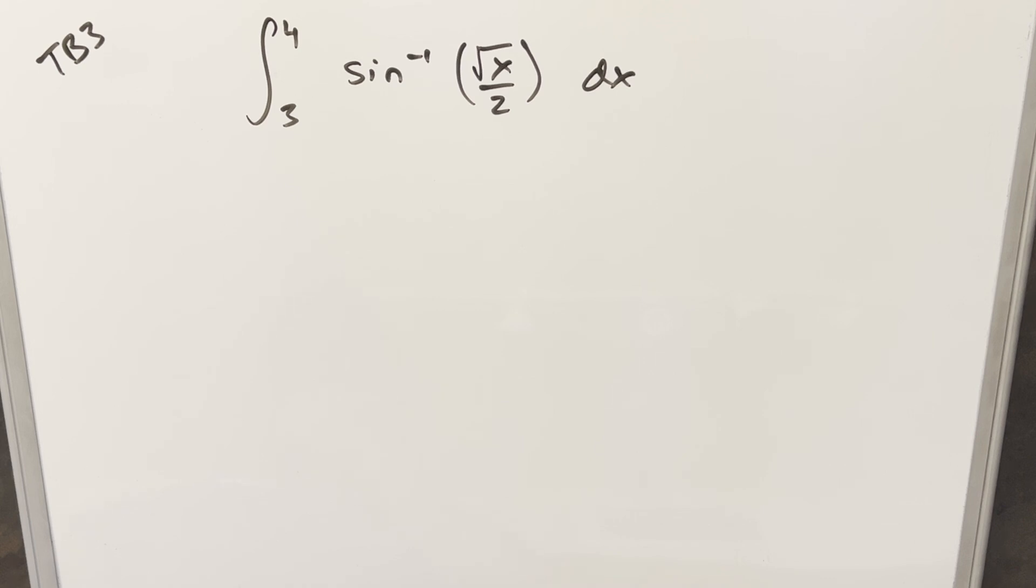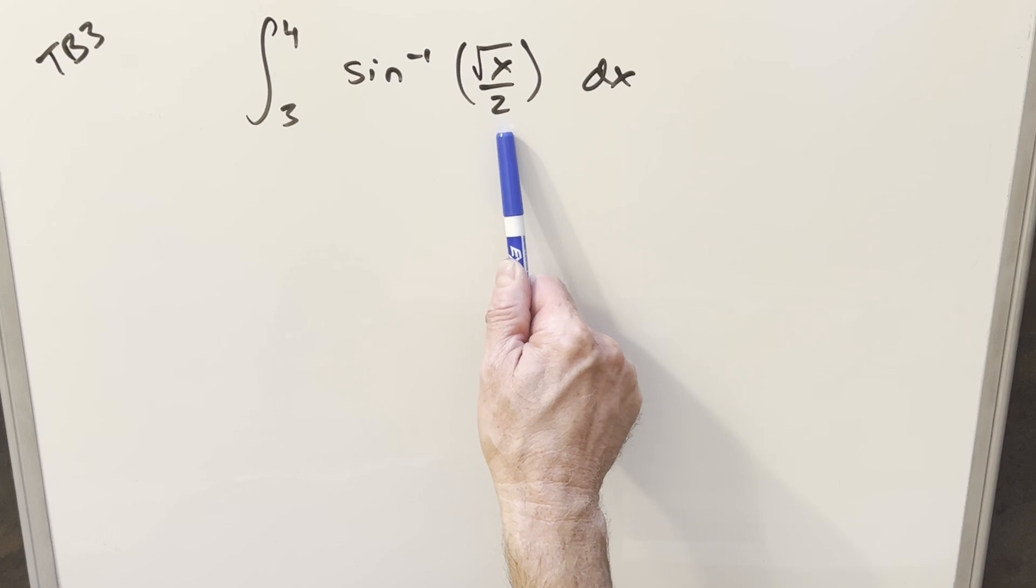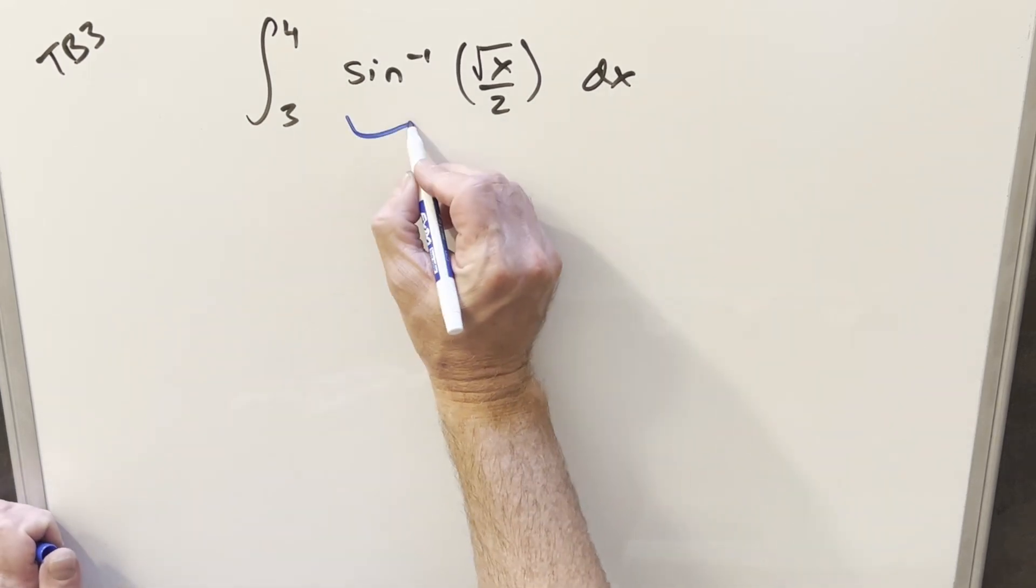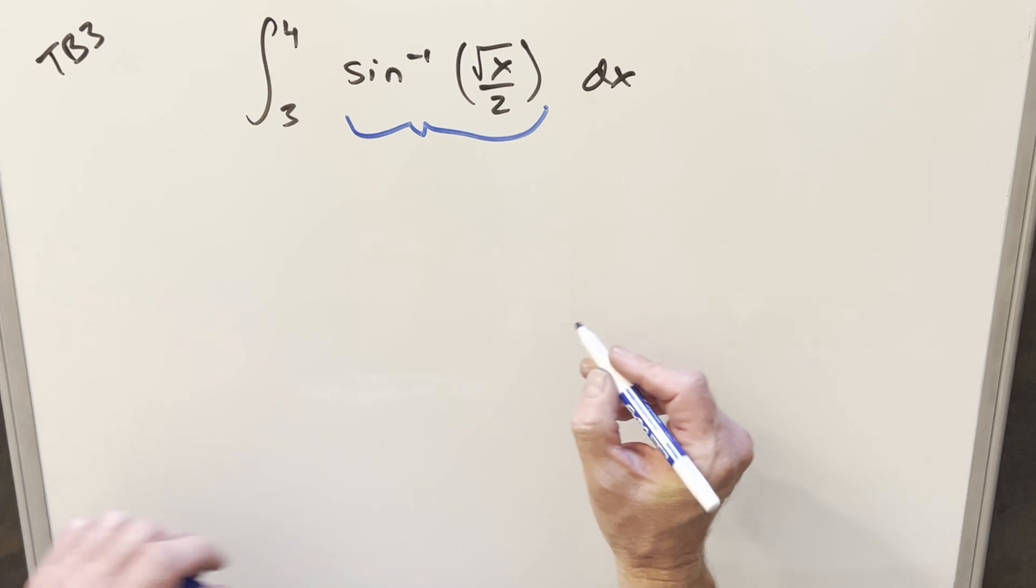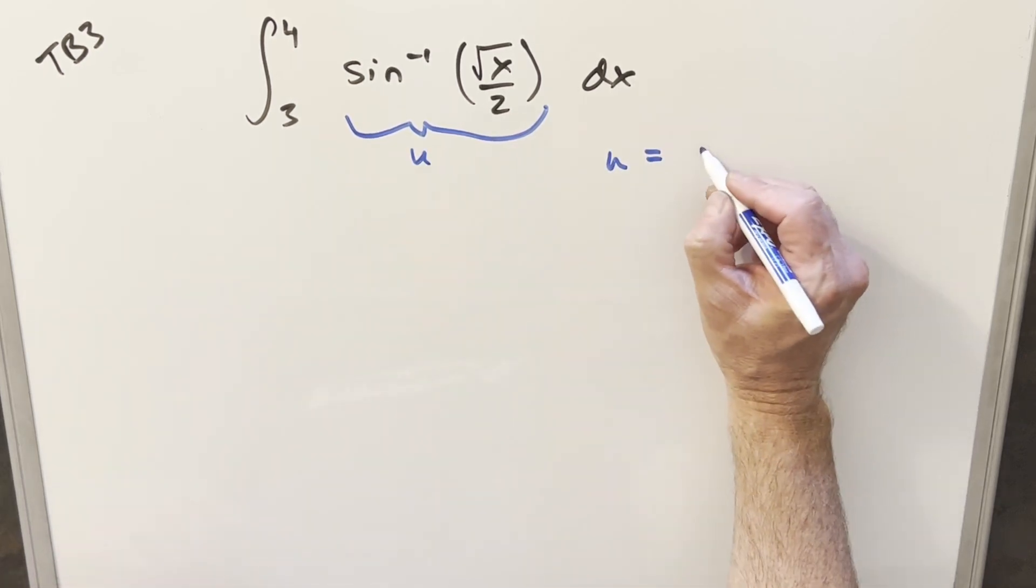I think there's a few different ways to go with this. The first thing I did was just substitute for the input here to clean that up, like u equals square root of x over two. But what I think I want to try for this, maybe to save a step, I just want to make a u substitution for the whole thing and see what happens.